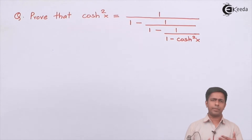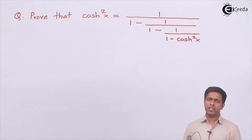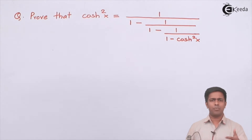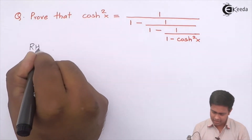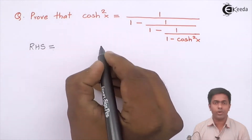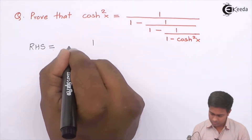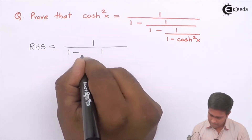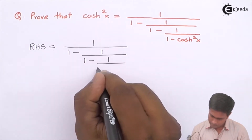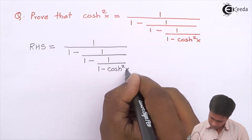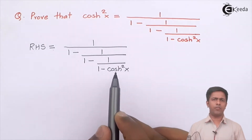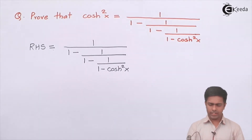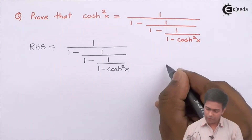I'll start from the right-hand side, obviously, because there are more terms there. So here I'll say RHS — that is right hand side — is equal to that nested expression. Let's work through it step by step, applying the appropriate formula as each step comes.